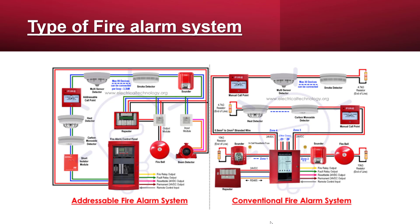In a conventional fire alarm system, the control panel is connected to each device using a separate wire and is typically set up on zones. Utilizing zones helps to narrow down the location of a potential fire. For example, if your facility has six floors and each floor is set up as a zone, the fire department can determine on which floor the fire is located based on the activated zone.